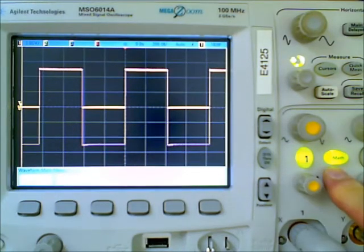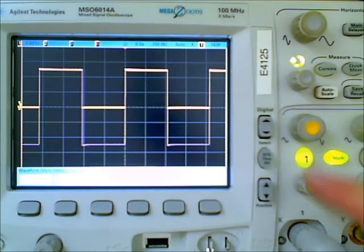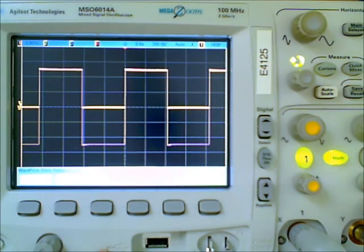And so the math functions are available for you so that if you put a function, maybe a voltage function in channel one and a current function in channel two, you can actually multiply the two together to get a power function. So there's lots and lots of things that you can do with the features that are available in the vertical sensitivity selection area. All right. So that's it for vertical sensitivity. Thanks.